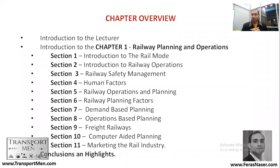In Section Three, railway safety management — how we manage safety in a railway environment. In Section Four, human factors — this system that humans have to interact with, and how we understand the different factors that humans bring to the table. We'll also be talking about railway operations and planning in more detail in Section Five.